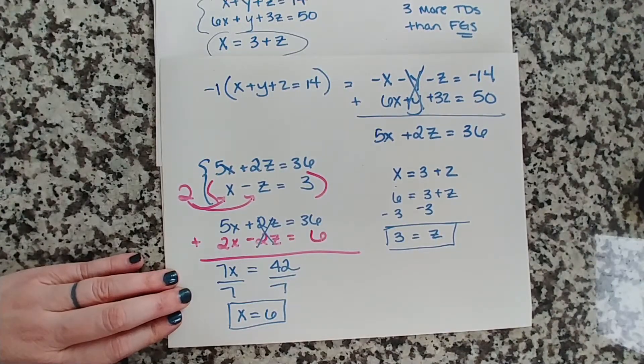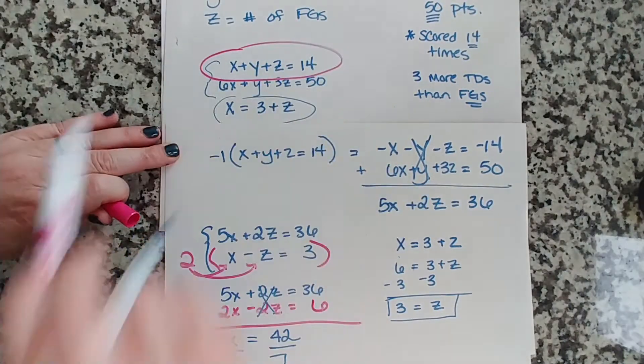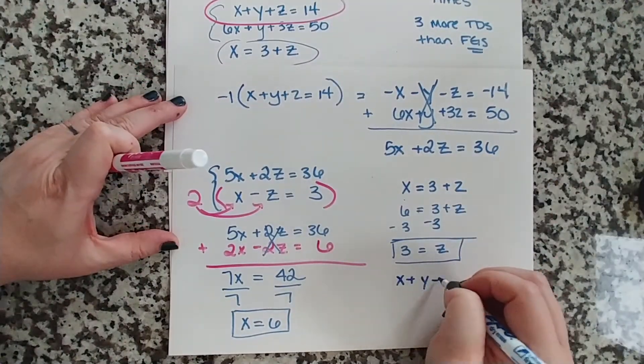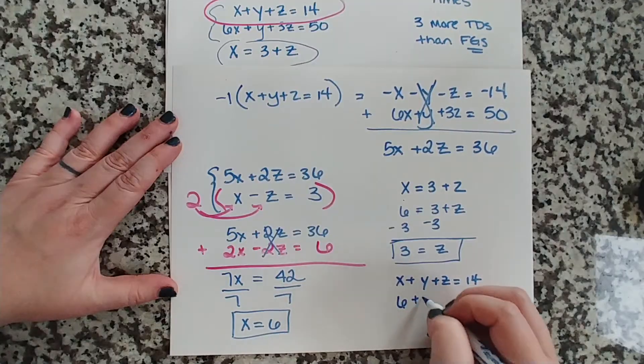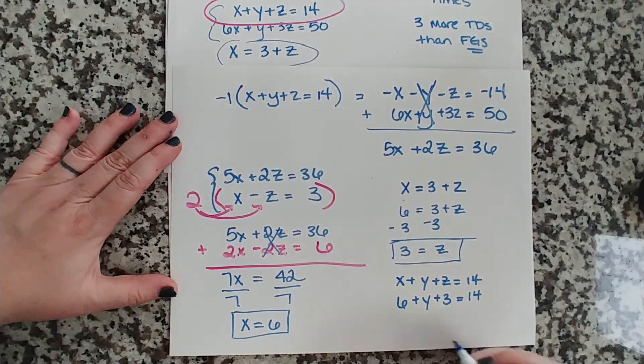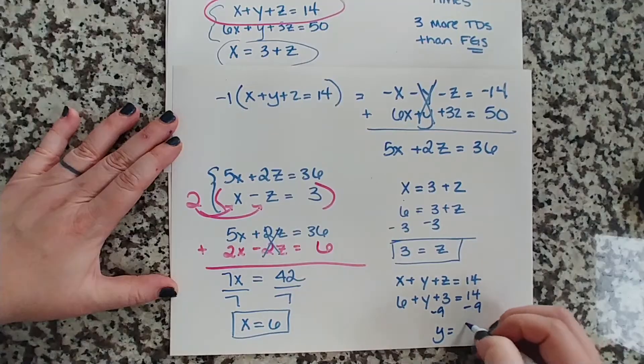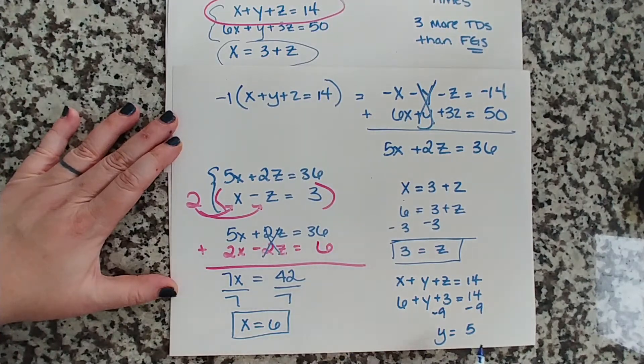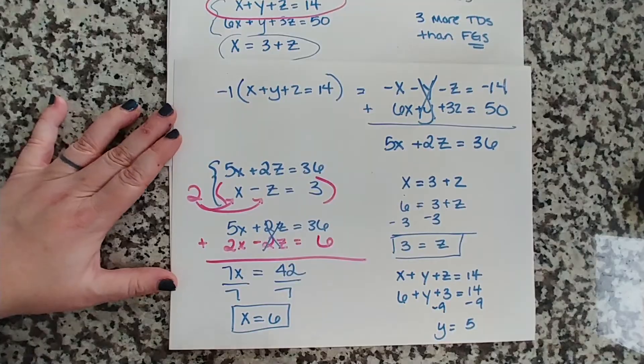So we can take any of our original equations and plug in our two known values. So I'm going to go way back to our original X plus Y plus Z equals 14 because it's the nicest and easiest. And I'm going to use that. So X plus Y plus Z equals 14. And my X is 6, so 6. My Y is still my unknown. My Z is 3 equals 14. 6 and 3 is 9, right? So we're going to say subtract 9, subtract 9. Y equals 14 minus 9, which is 5. So we have that they scored 6 touchdowns, 5 points after the touchdowns, and 3 field goals. So it looks like they missed a field goal. They missed a point after the touchdown.